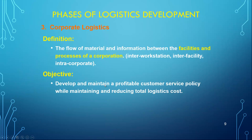Corporate logistics is defined as the flow of material and information between the facilities and processes of a corporation. We now talk about inter-workstation, inter-facility, and intra-corporate logistics, where the corporation plans and implements logistics between its different buildings, plants, and facilities. The objective evolved to develop and maintain a profitable customer service policy while reducing total logistics costs — more movement means more cost, requiring trucks, fuel, and insurance, so the goal is to optimize and reduce costs.